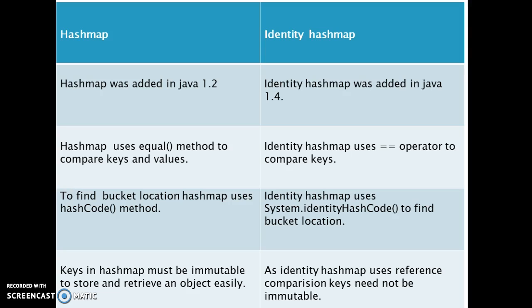HashMap was introduced in Java 1.2 and IdentityHashMap was introduced in Java 1.4. HashMap uses the equals() method to compare keys, whereas IdentityHashMap uses the == operator to compare keys.